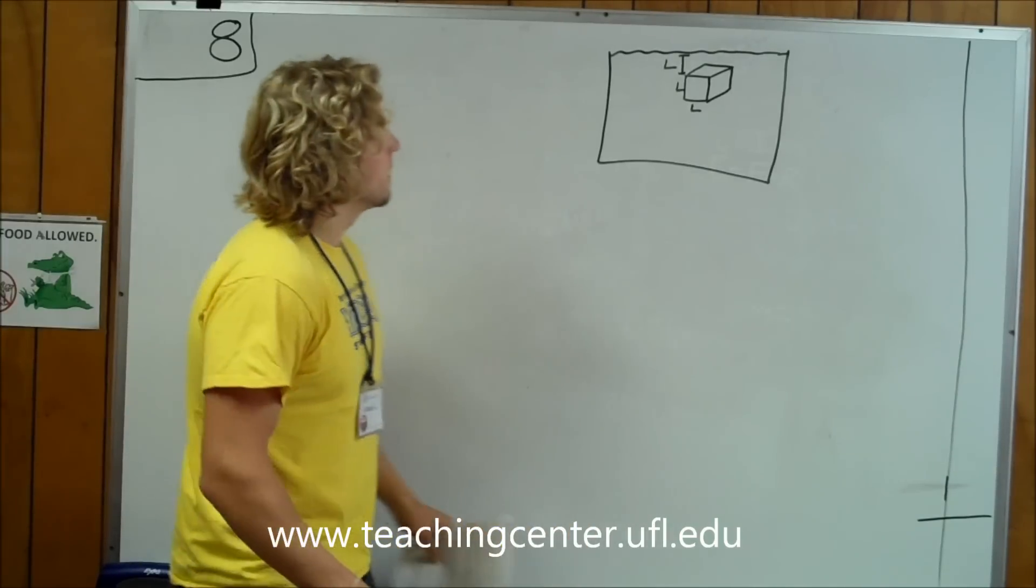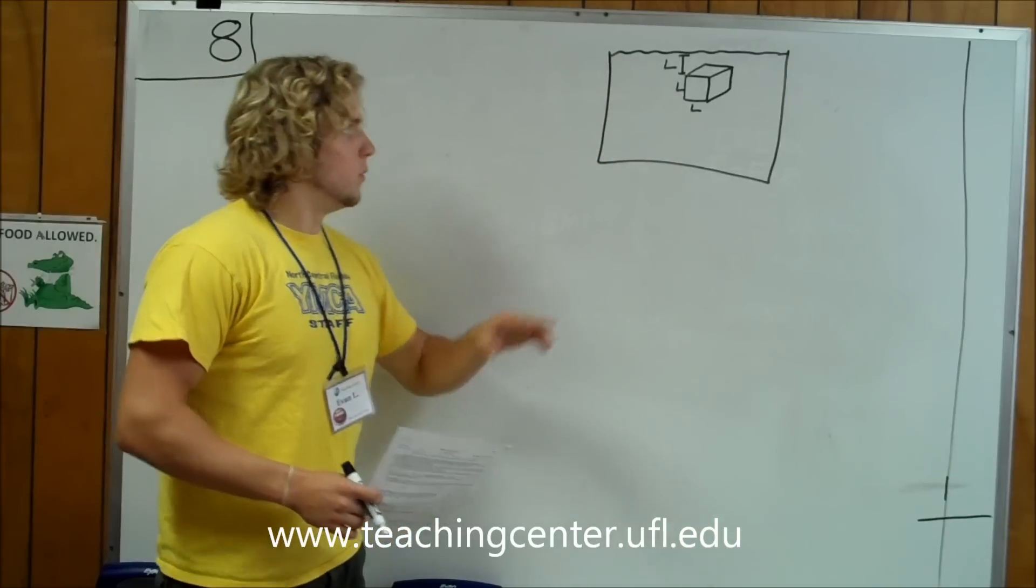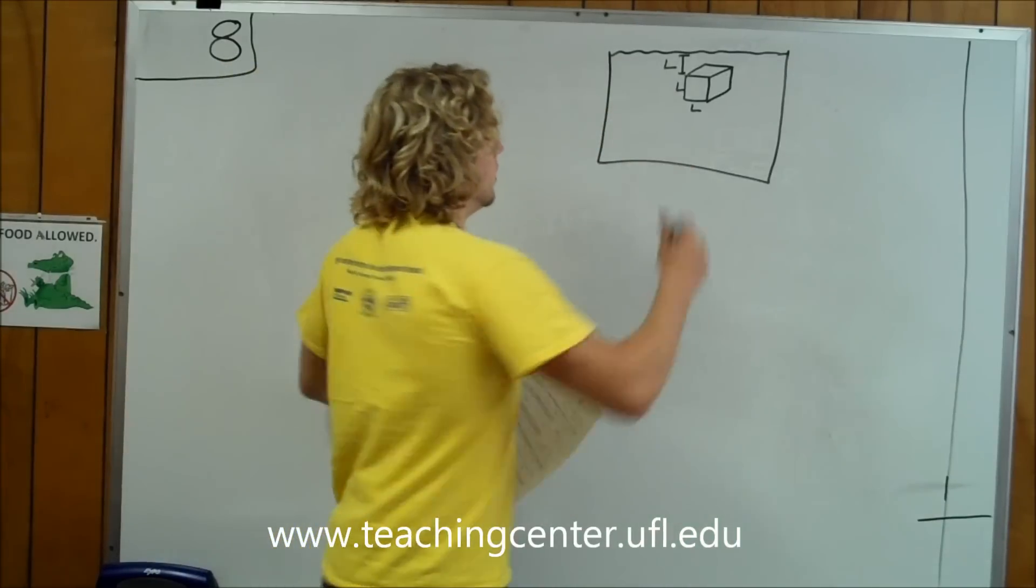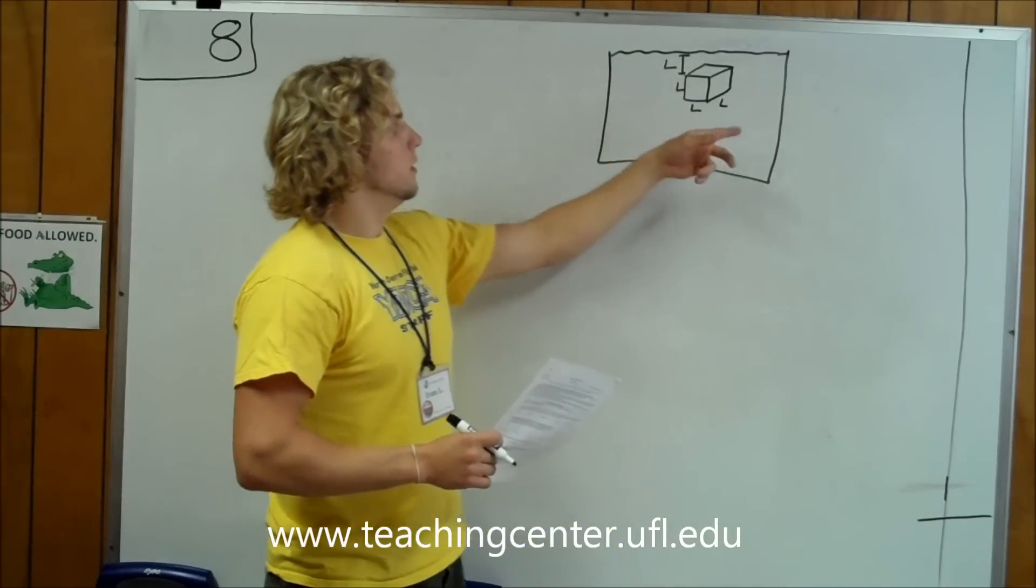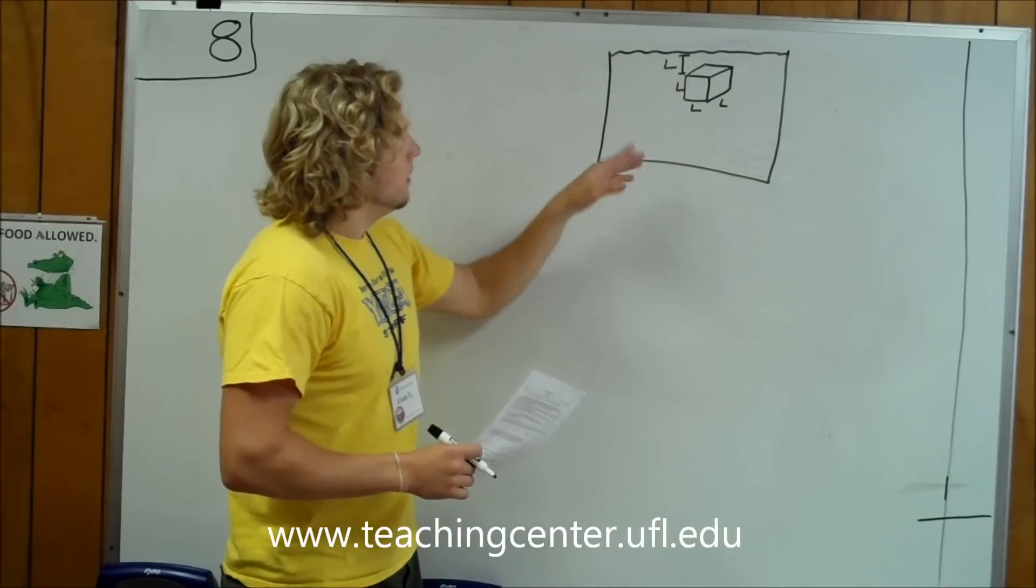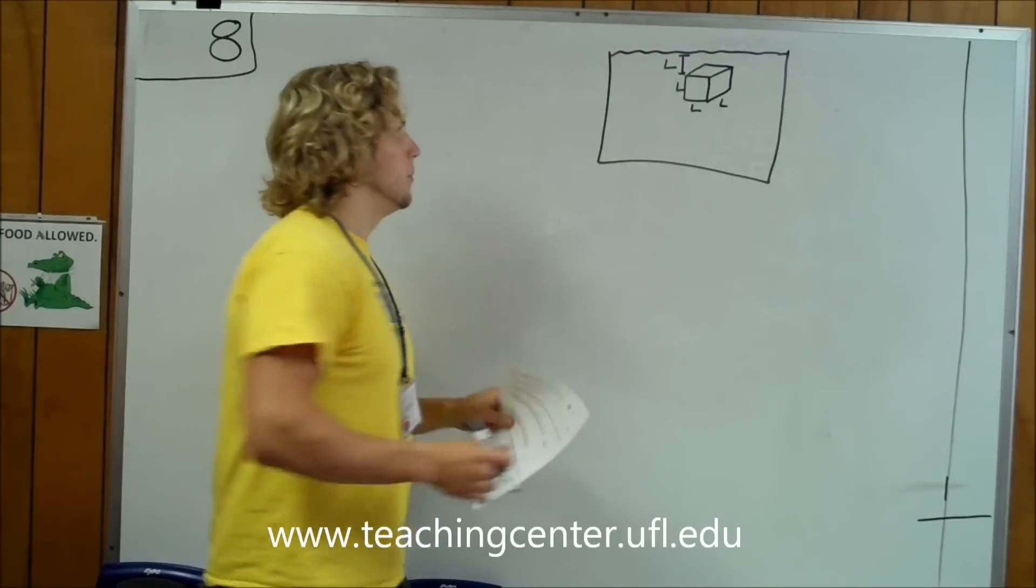This is the visual scenario of the cube underneath the water. You have a cube of all lengths L - L down, L to the side, L deep, and it's a distance L underneath the top of the water.